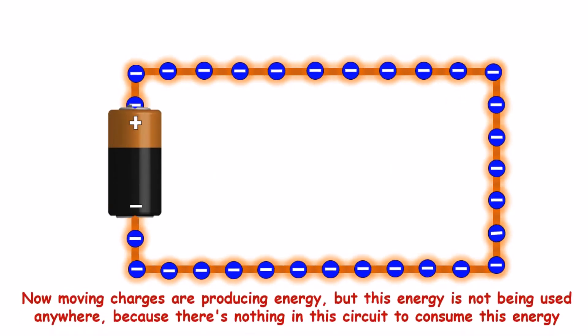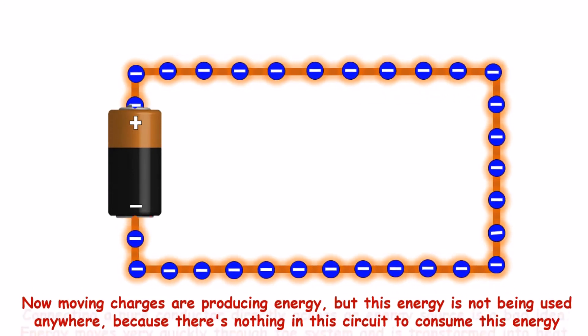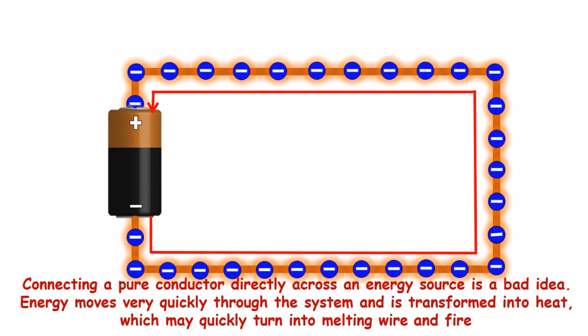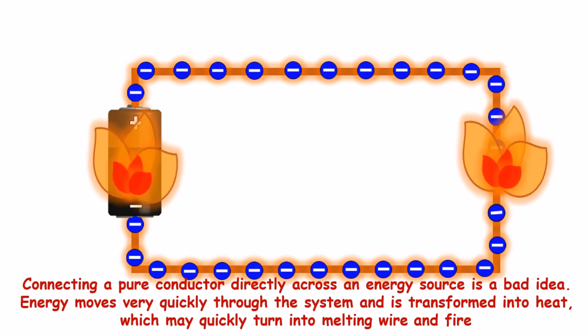Now, moving charges are producing energy but this energy is not being used anywhere, because there is nothing in this circuit to consume the energy. Connecting a pure conductor directly across an energy source is a bad idea. Energy moves very quickly through this system and is transformed into heat in the wire, which may quickly turn into melting wire or fire.